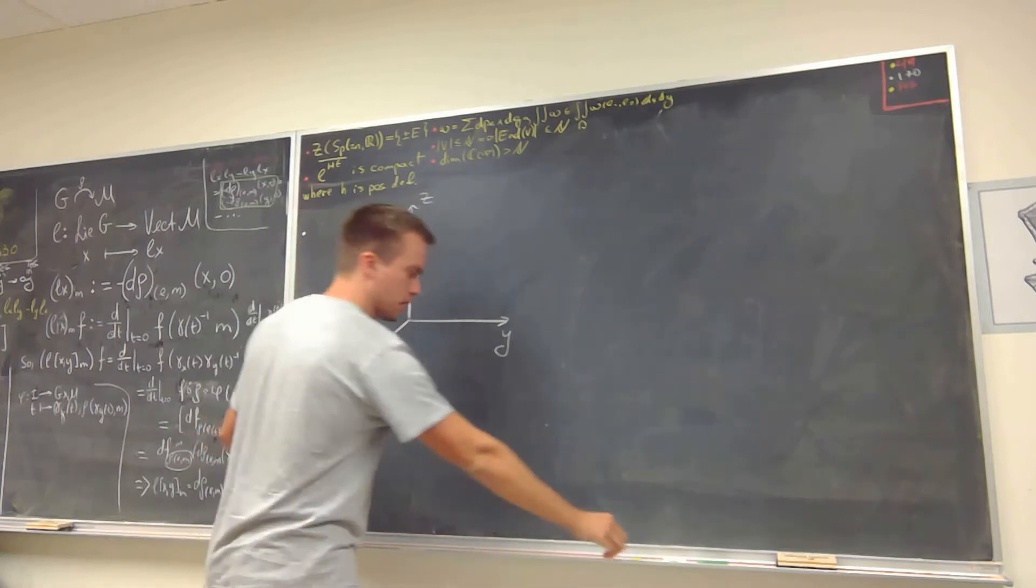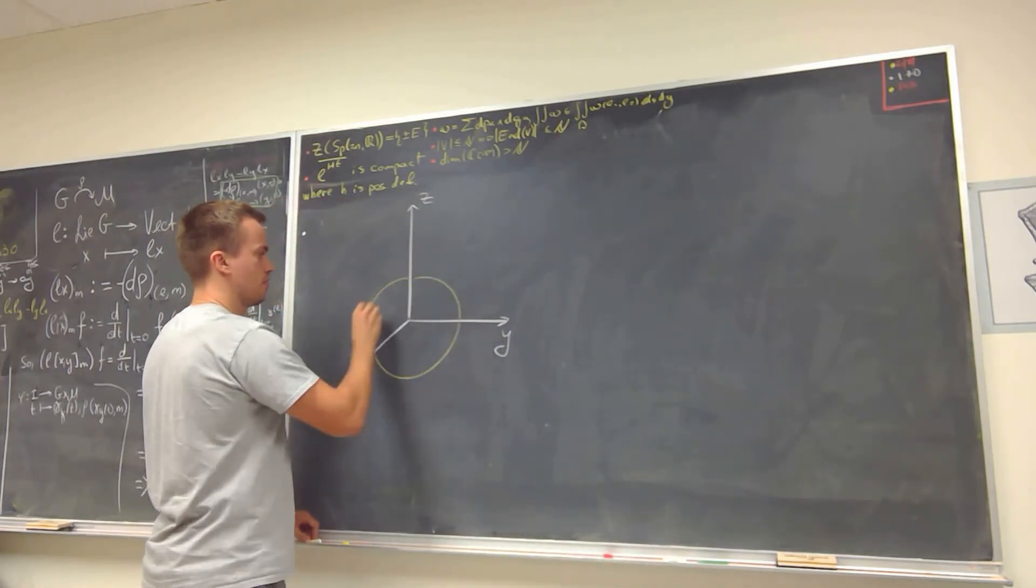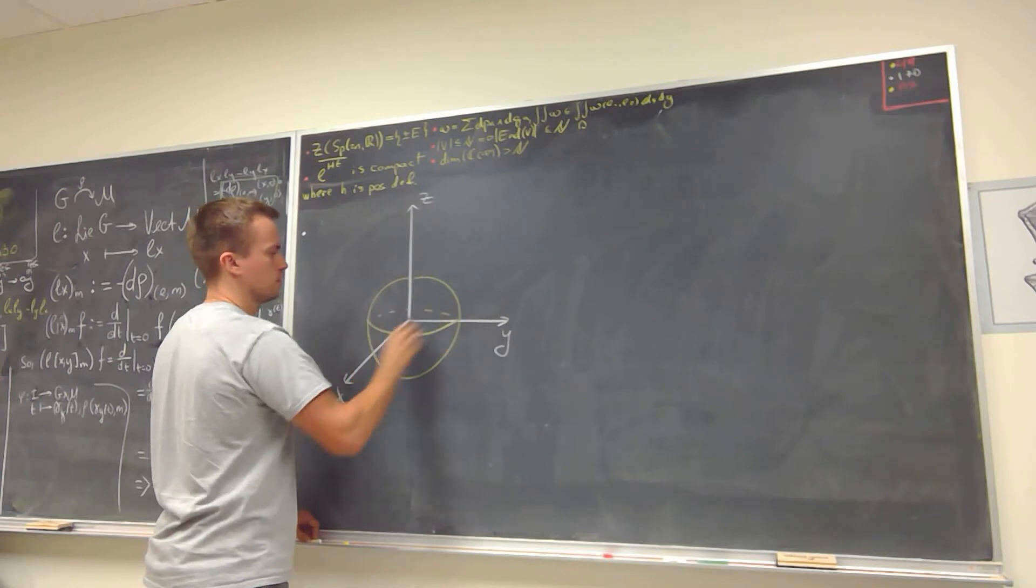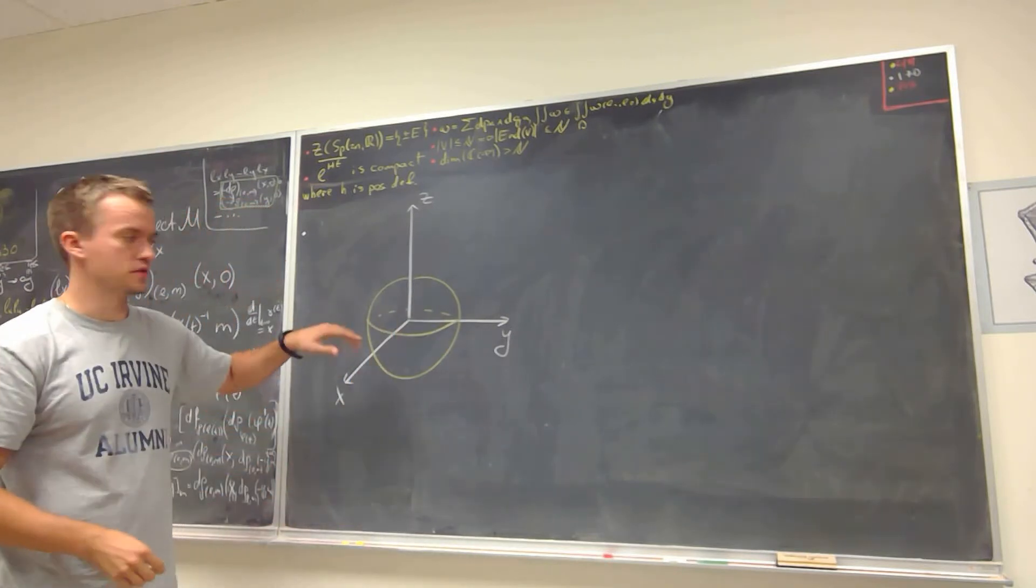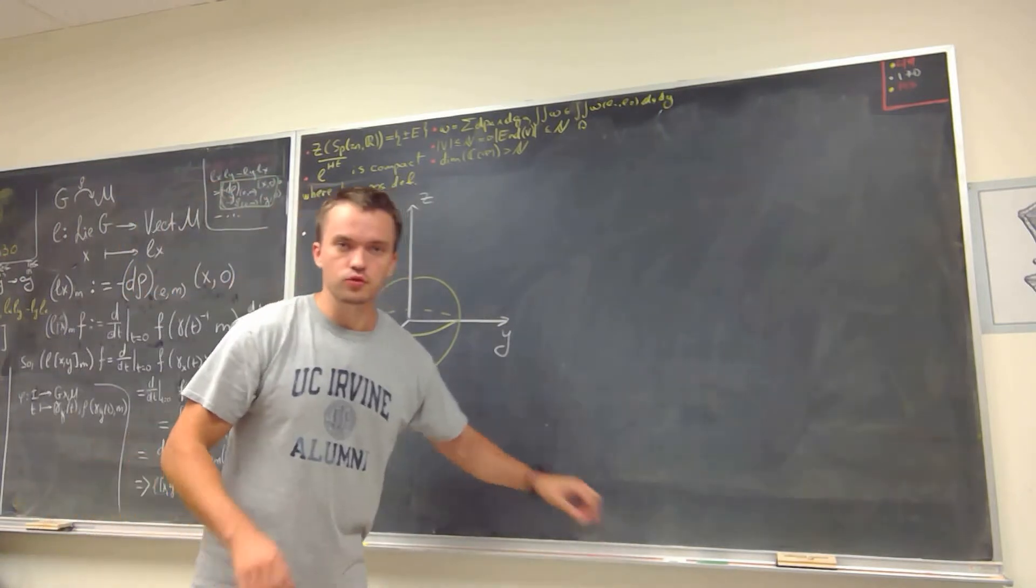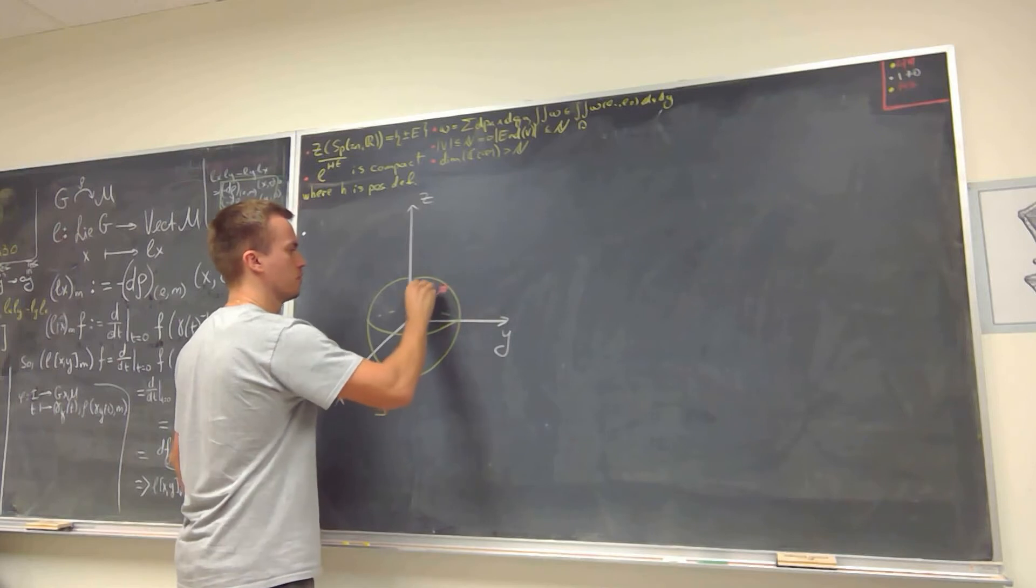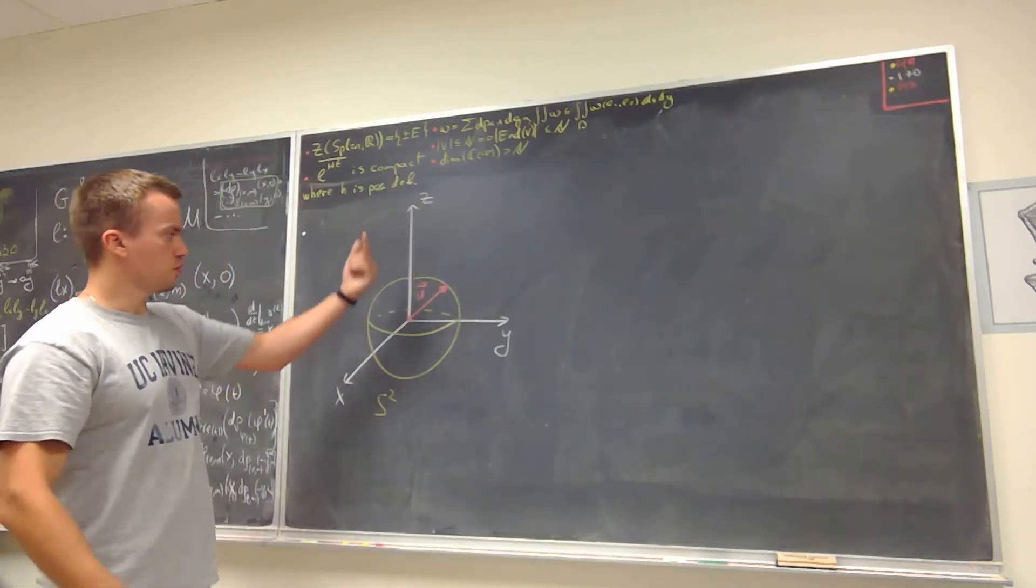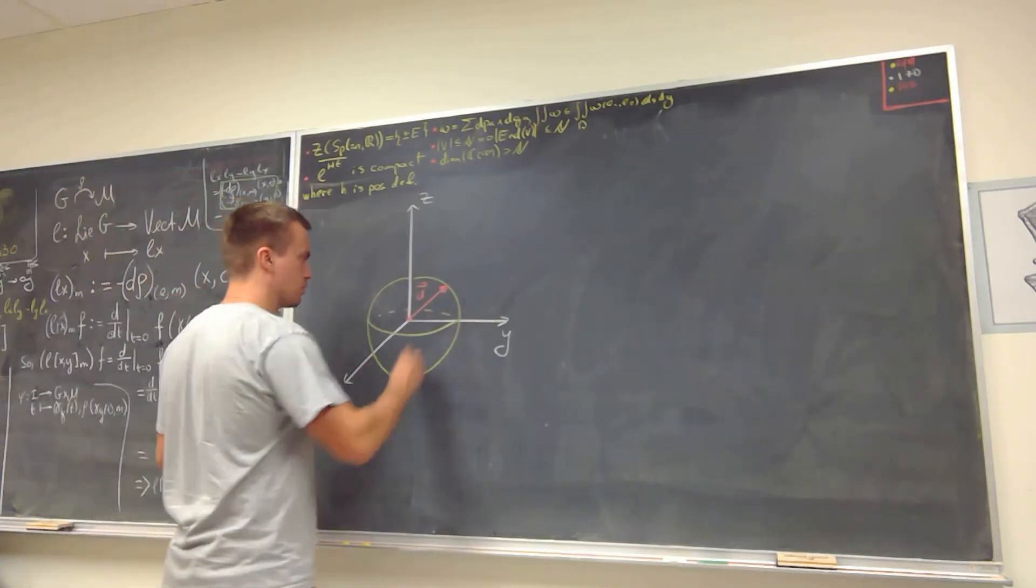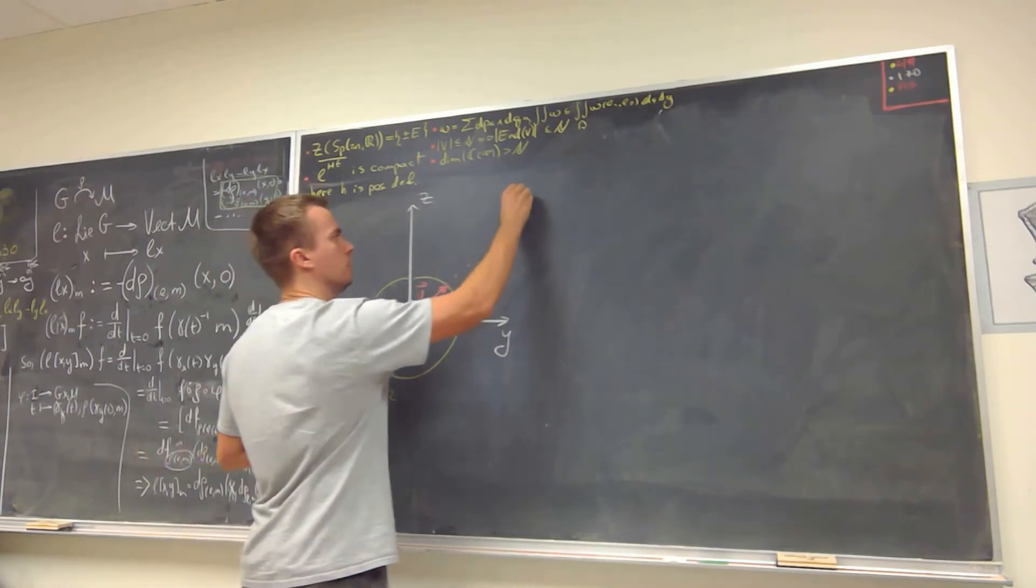And by rotation I mean that in this three-dimensional space I'm going to have the unit sphere. And in this unit sphere I'm going to choose some unit vector, let's call this unit vector u. Through this unit vector I'm going to put some line, like l.